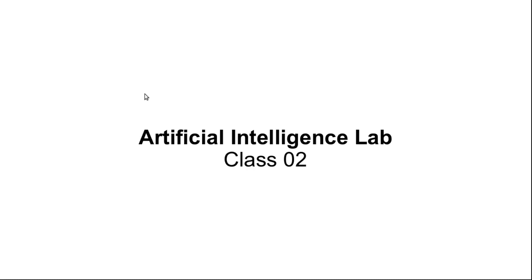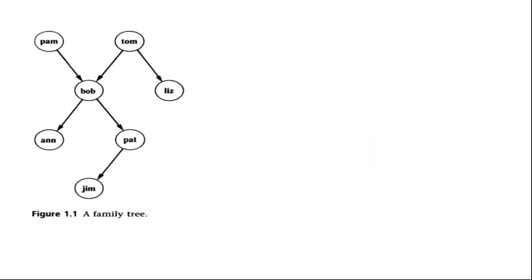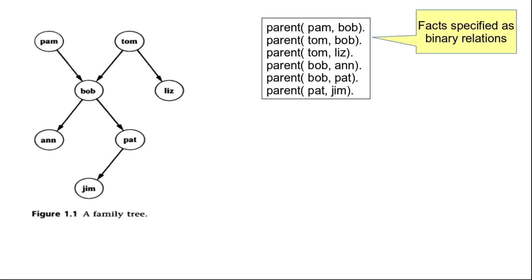Welcome to today's class. This is our second class on Prolog programming. In the last class we talked about facts and how we can represent facts in Prolog, and we used a family tree as an example. In this family tree we can see who is the parent of whom, and we represented this parent relation using facts.